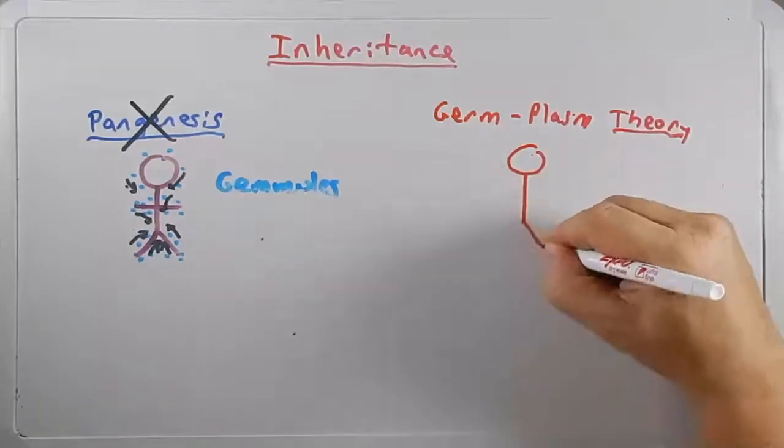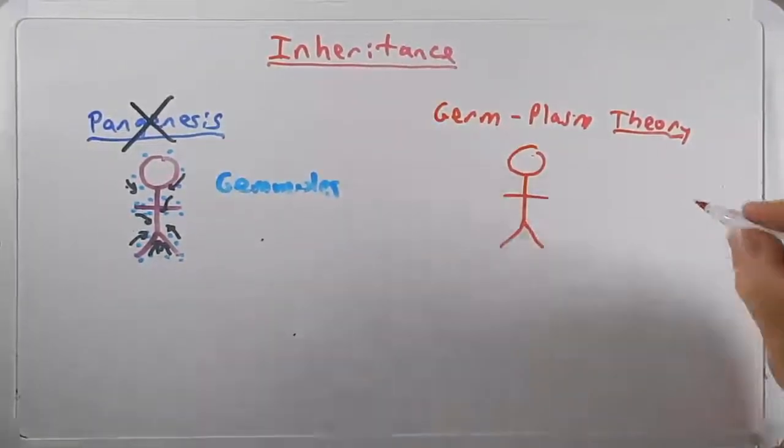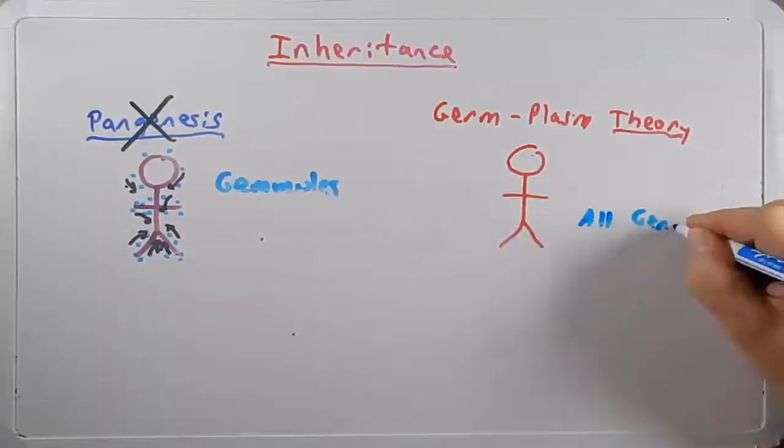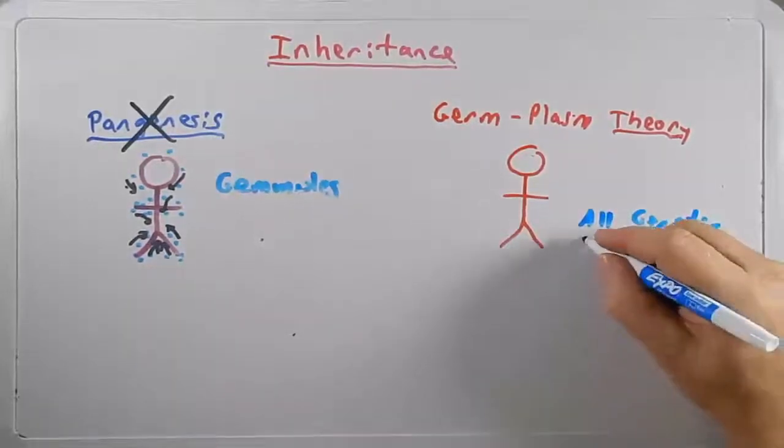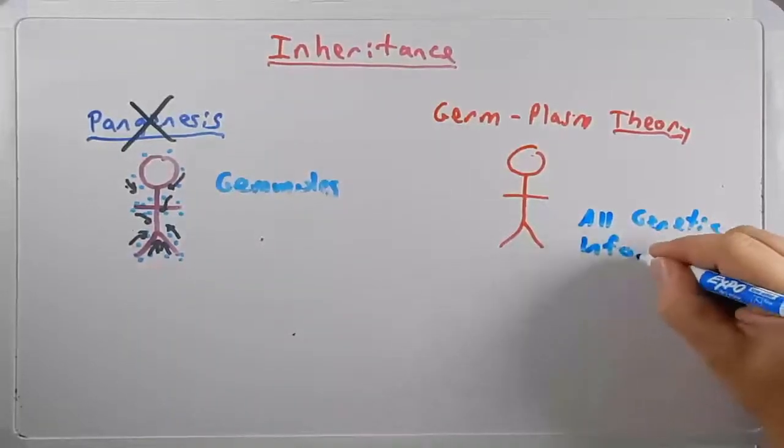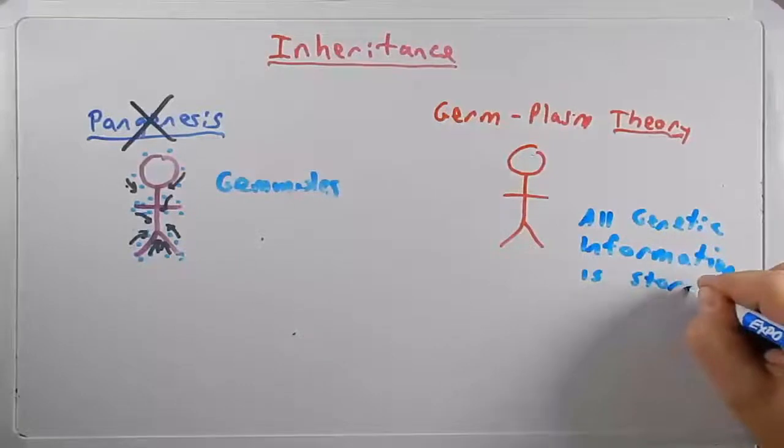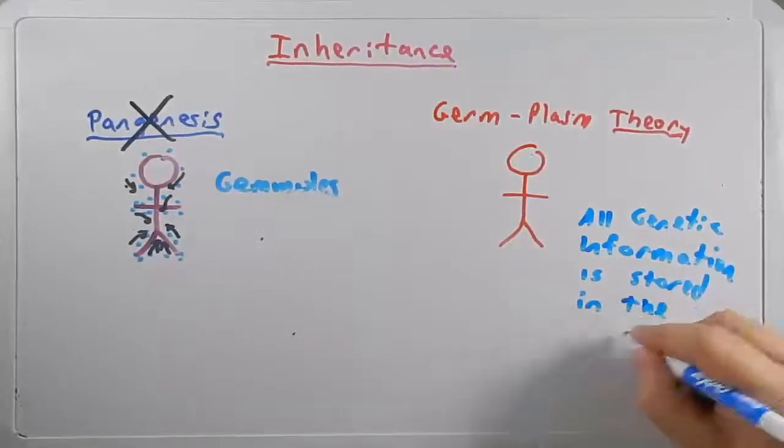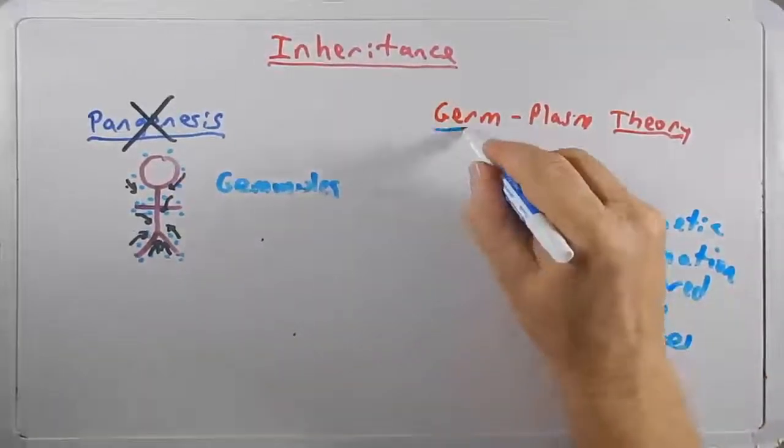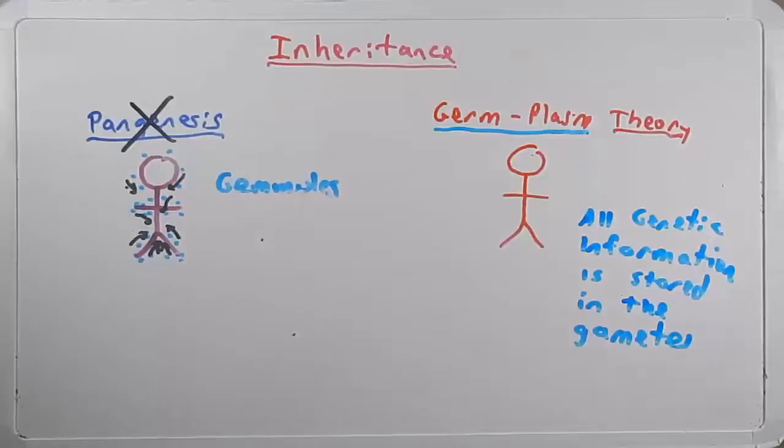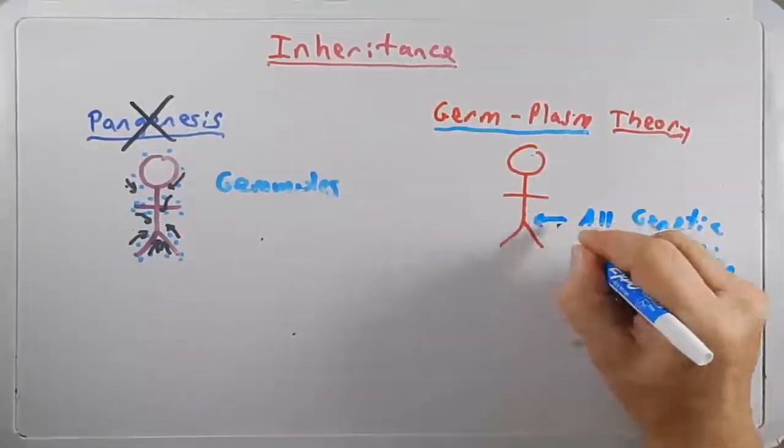But in science, when we say the word theory, it's important to remember that that means it is a very strongly supported idea with a lot of evidence to back it up. So let's draw our famous stick figure here. And all this theory says is that all the information, all genetic information, is stored in the gametes or what we might call stored in the germplasm.